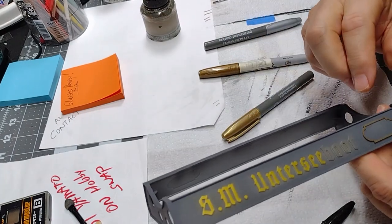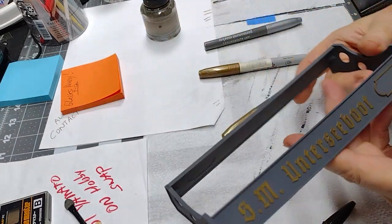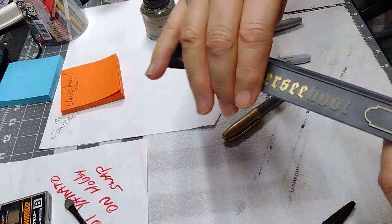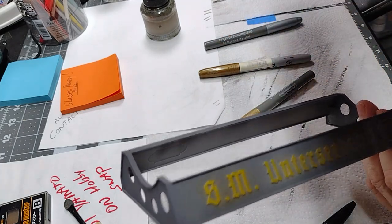I may do a little bit of weathering on these. I like the way this gold looks and I like the way this gold looks, so I think I'll just do one side one way, one the other.